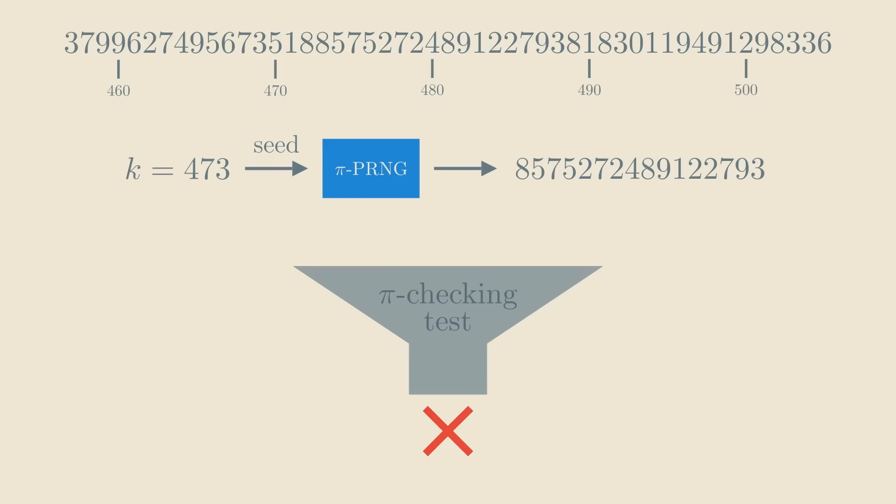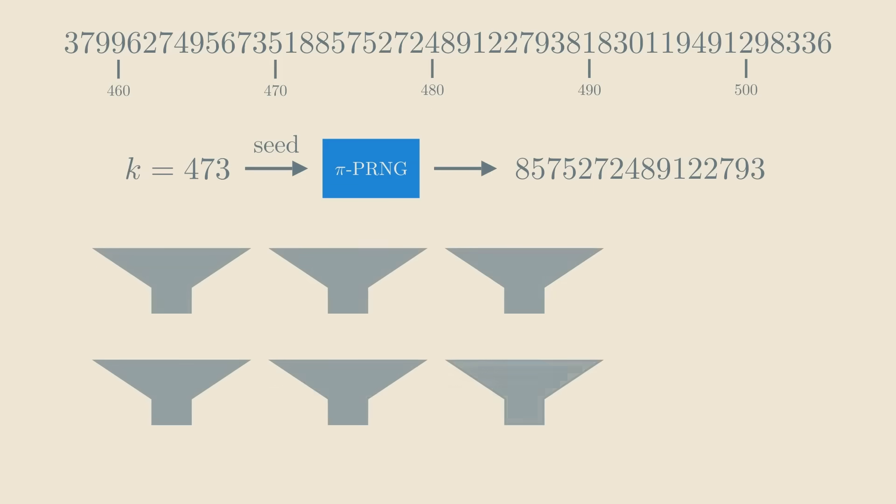This statistical test can flag the pseudorandom bits coming from our pi-based generator, but the catch is that the test also needs a lot of time, n to the 10th. What about tests that are faster than that? Those don't have the time to check all the digits of pi, so it's plausible to conjecture that our pseudorandom bits passed all tests that run much faster than n to the 10th steps.